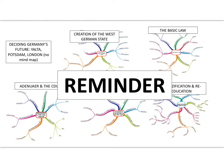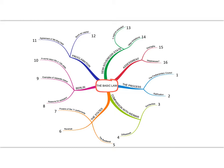The mind map I've chosen is the one on the Basic Law. You can print that particular slide off from the PowerPoint and try to map around the edge the key points — there are 16 points about the Basic Law and the constitution of the Federal Republic of West Germany.